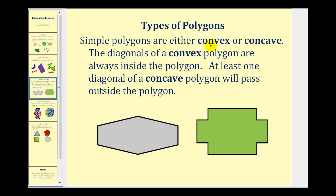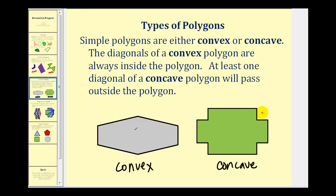Simple polygons are either convex or concave. The diagonals of a convex polygon are always inside the polygon. However, at least one diagonal of a concave polygon will pass outside the polygon. So this would be a simple convex polygon, because all the diagonals were inside the polygon as we saw on the previous screen. And this would be a simple concave polygon, because some of the diagonals pass outside the polygon. You can also think of a concave polygon as two sides caving toward the inside of the polygon — so these two short sides here cave toward the inside, and therefore this is a concave polygon.